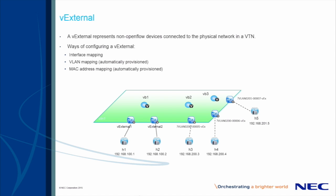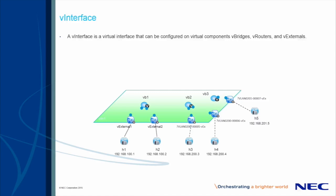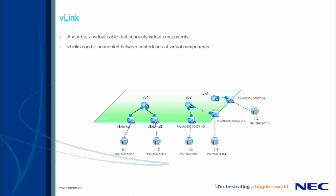Next, we shall highlight how to connect V-externals to other VTN components using V-interfaces. V-interfaces allow us to interconnect VTN components and are similar to interface names or aliases on switches or servers. They enable us to identify specific interfaces of VTN components, such as V-bridges, V-routers, or V-externals. V-links interconnect V-interfaces much like a physical cable would for physical interfaces. V-interfaces and V-links are automatically created when using the VLAN mapping or MAC mapping technique, as indicated by the dotted lines in the diagram.